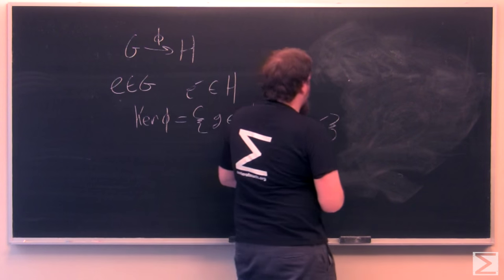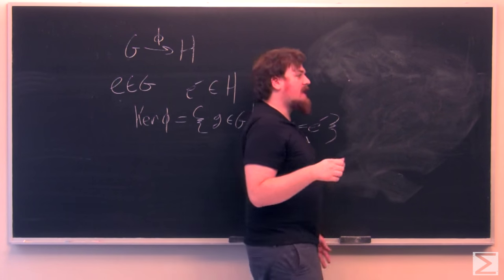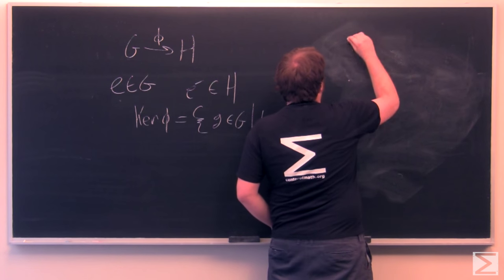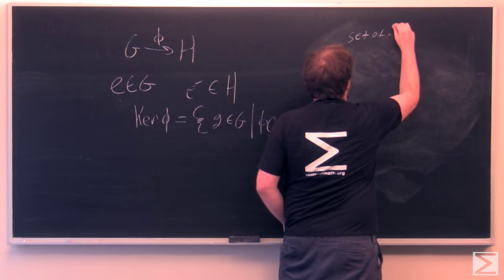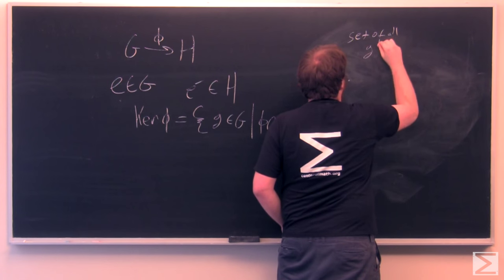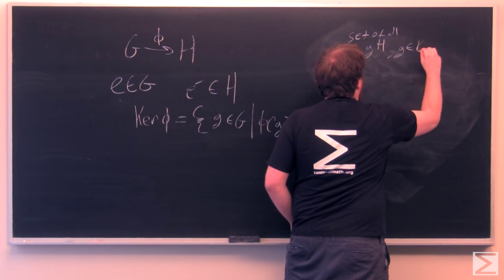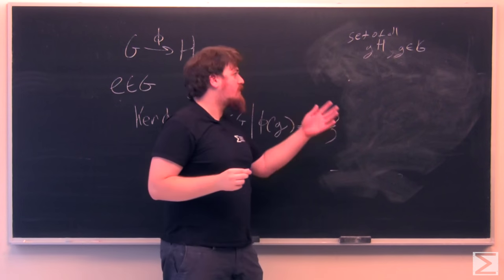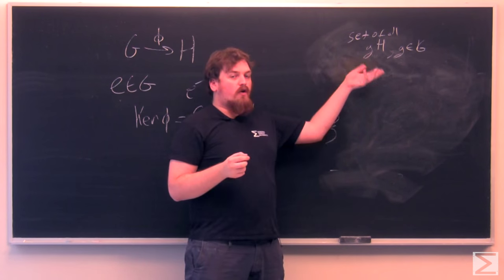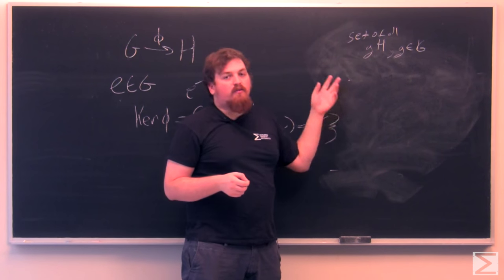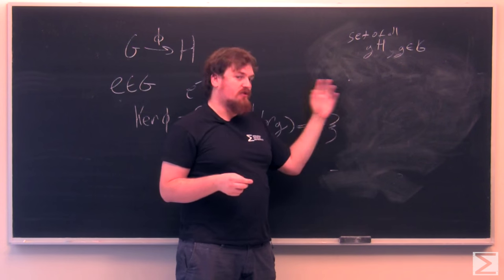The reason normal subgroups are useful is that the coset spaces, the left coset space is the set of all these cosets by elements in G of H. When H is a normal subgroup, this has group structure.